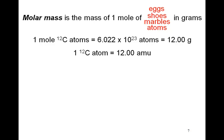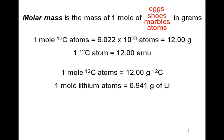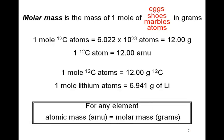One mole of carbon-12 atoms has a mass of 12 grams. One mole of lithium atoms has a mass of 6.941 grams. For any element, the atomic mass in AMUs is equal to the molar mass in grams.